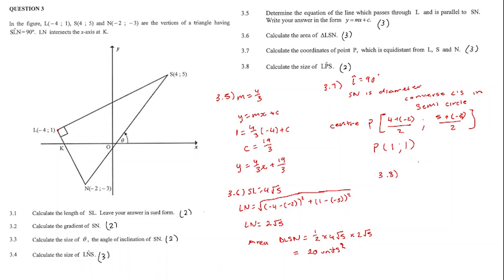Calculate the size of LPS. Since P is at the coordinate point 1, 1, P is in line with L on the y-axis, making it parallel to the x-axis. We can say that LPN is equal to theta, which is equal to 53.13 degrees.